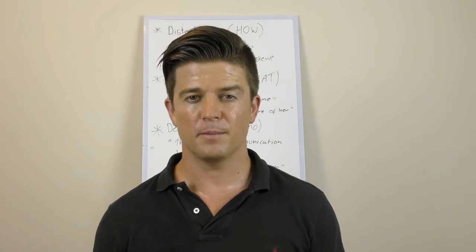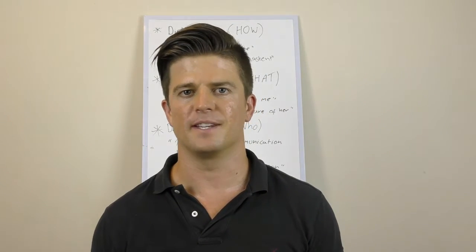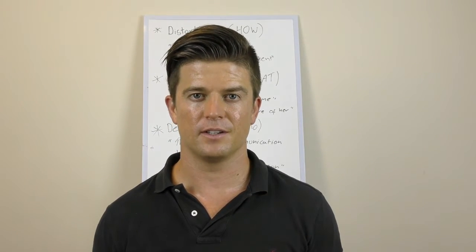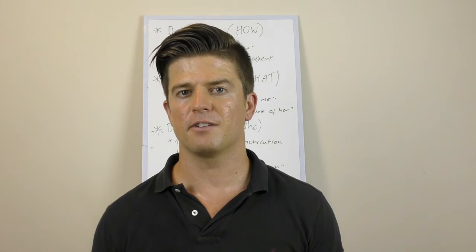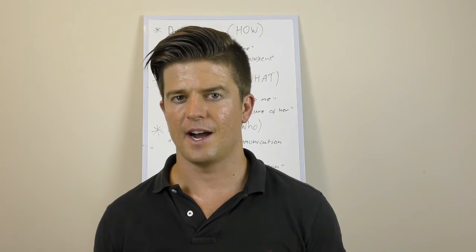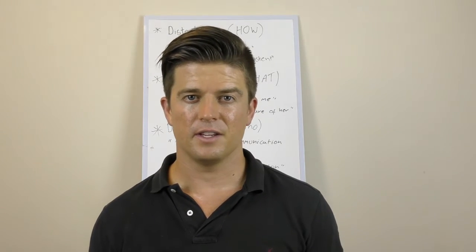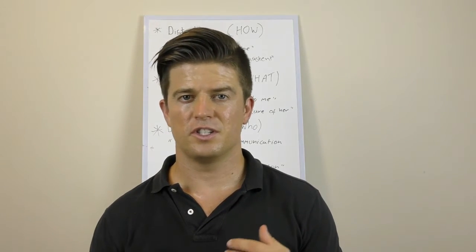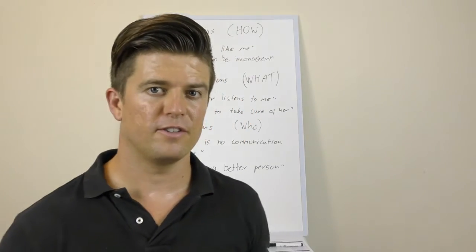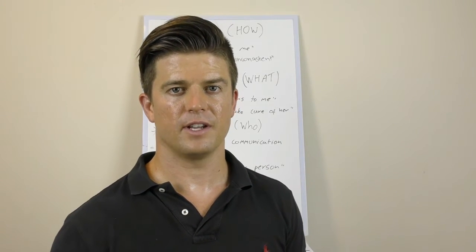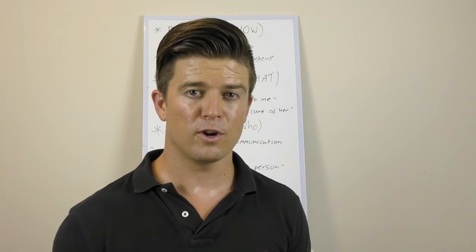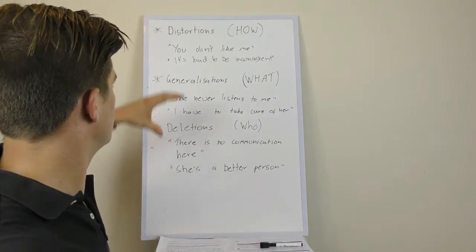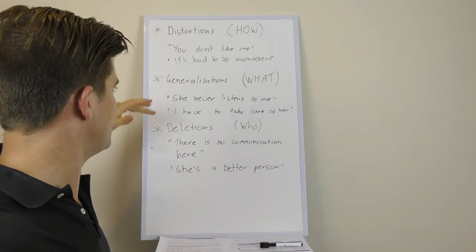So like I mentioned earlier when we communicate we can commonly leave out key pieces of information. Now we're able to recover those pieces of information by asking particular questions but first we need to be able to categorize the information and then figure out what questions we need to ask. So with the meta model we can categorize these sort of incomplete language patterns into distortions, generalizations, and deletions. Now the meta model itself is quite complex so for today I've actually only selected a couple examples of each of the categories. If you want a full copy hit me up and I'll send you one or put you onto a link where you can get one.